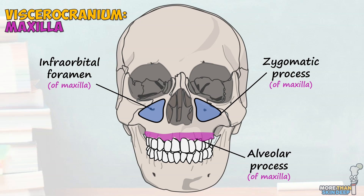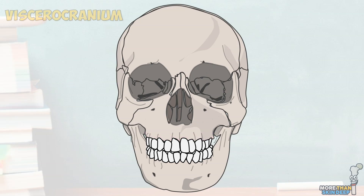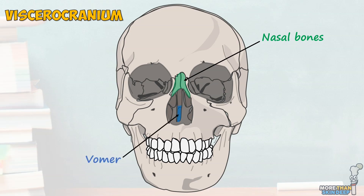The palatine bone forms a tiny part of the floor of the orbit. These two L-shaped bones also form the back of the nasal cavity as well as part of the posterior hard palate. The last parts of the upper viscerocranium are the two flat nasal bones, which form the front of the nasal cavity; the vomer, which forms the posterior part of the nasal septum; and the inferior nasal conchae, which are curved bones that sit inside the nasal cavity.